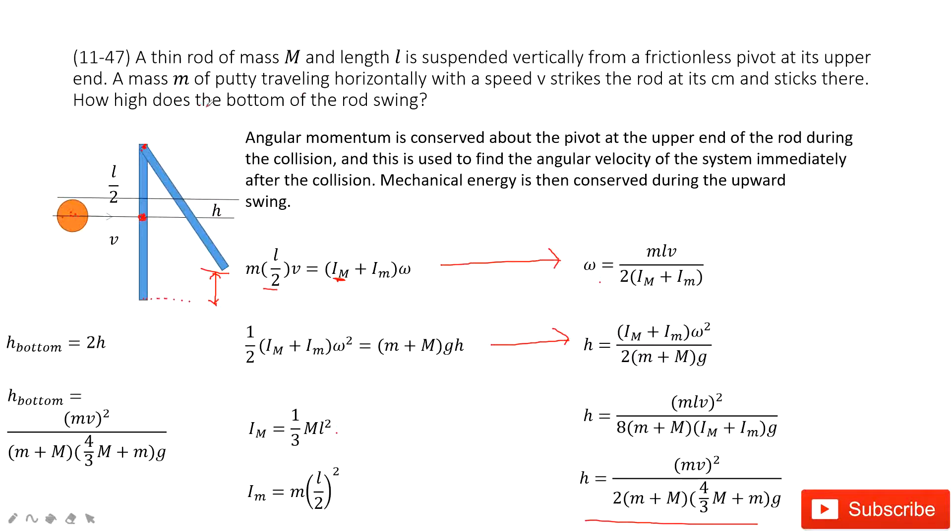Now we need to find how high the bottom of the rod swings. Using similar triangles - this is the center of mass, this distance is l divided by 2, this length is l, so twice. The distance moved by the bottom end of this rod is 2h. Now the problem is solved. Thank you.